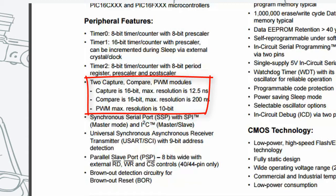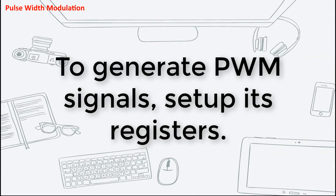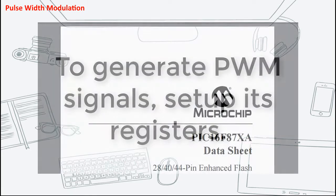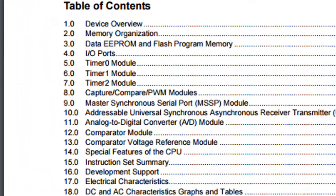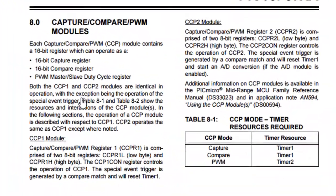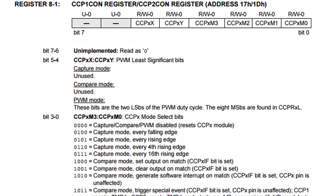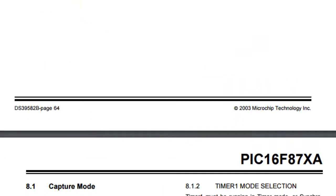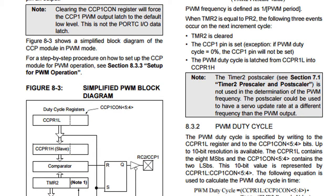If you use PWM functionality, you won't be able to use the other functionality of the module, and vice versa. To be able to generate PWM signals using your microcontroller, you have to set special registers. The microcontroller's datasheet covers all of the steps you need to set it up. Referring back to the datasheet, go to the Capture Compare PWM Module section. At the start of this section, it will introduce the main registers that need to be set up for PWM mode. Scrolling down to the PWM section, it lists very specific information for setting up and generating a PWM signal, including all of the specific registers that need to be set up.